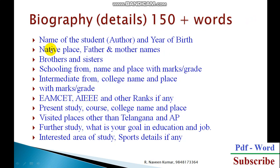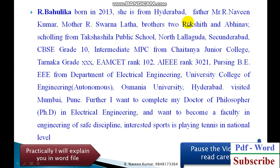The biography details should be 150 words or more. The biography should contain all these points — please pause this video and read every bullet point. The points include: name of the student, year of birth, native place, brother and sister details, present study you are pursuing, visited places other than your existing location, interested area of study, and sports you are interested in. I have given one example of how to write a biography of a student at the UG level when publishing a paper at the inter-college level. Pause this video and read carefully.